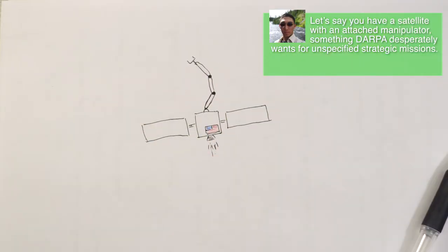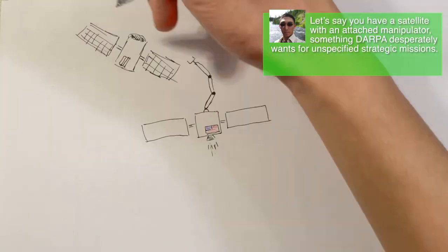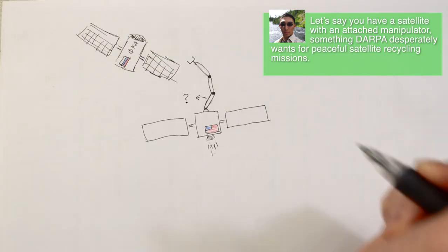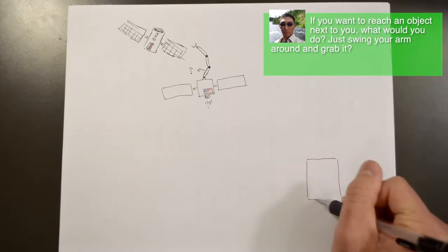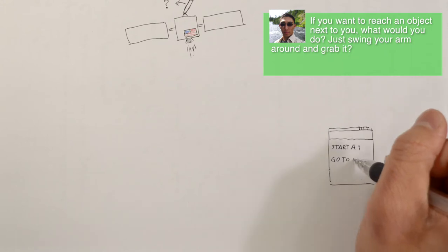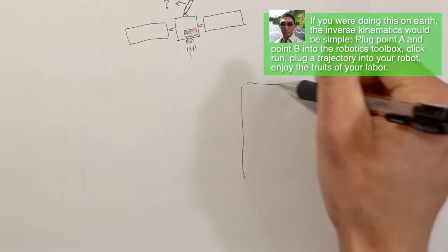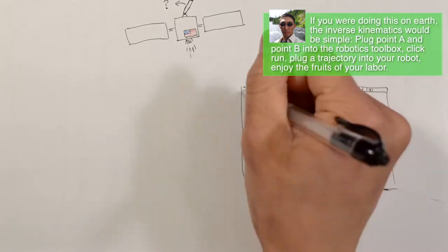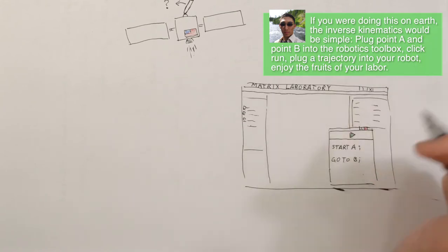Let's say you have a satellite with an attached manipulator, something DARPA desperately wants for unspecified strategic missions. If you want to reach an object next to you, what would you do? Just swing your arm around and grab it? If you were doing this on Earth, the inverse kinematics would be pretty simple. Plug point A and point B into the robotics toolbox, click run, profit.